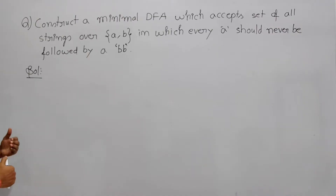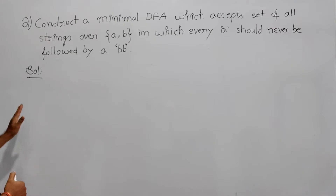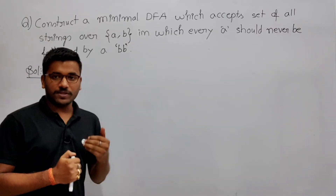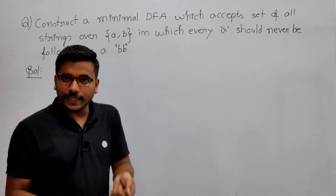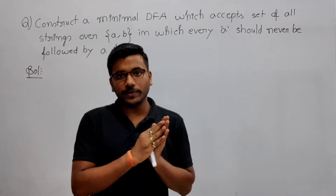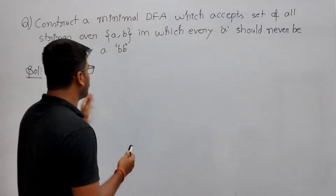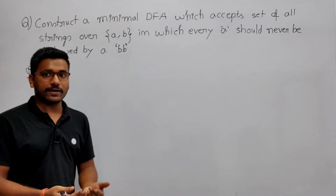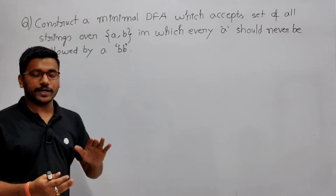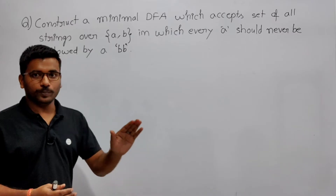The problem says: construct a minimal DFA which accepts the set of all strings over {a, b} in which every 'a' should never be followed by 'bb'. Means after 'a' there should not be two b's. If you are not having 'a', there is no restriction — epsilon belongs to the language, any number of b's belongs to the language. The only restriction is that if you have 'a', then there should not be two b's after it.